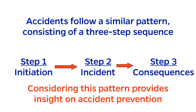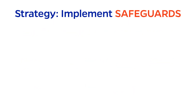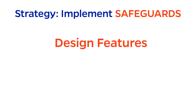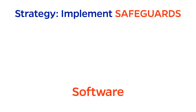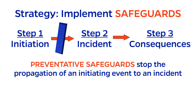Thinking about accidents in the context of this pattern can give us some insight about how to prevent future accidents. One strategy might be to implement safeguards in the form of design features, equipment, procedures, or software. There are two types of safeguards.